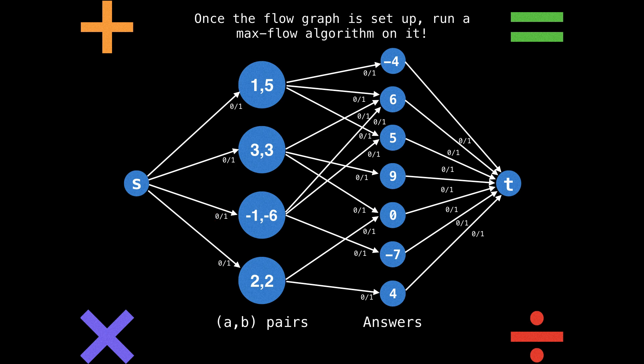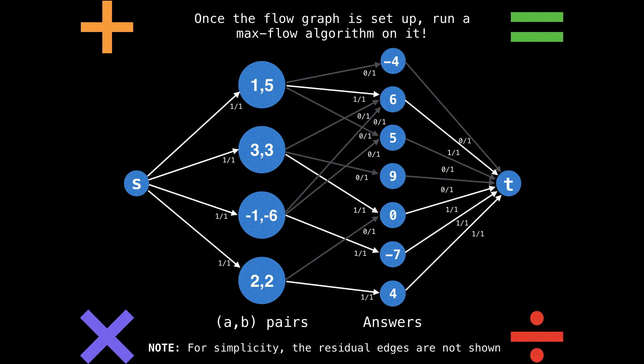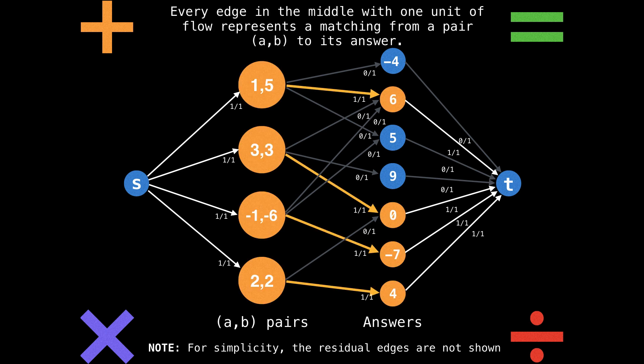Now the flow graph is set up. Let's run a max flow algorithm on it. The flow algorithm does its thing, and some edges are filled with flow. These are the edges that were selected to be part of the maximum flow. From this we can derive what the matching was. More specifically, we're interested in the middle edges. Those are the edges which give us information about the matching. Every edge in the middle with one unit of flow represents a matching from an input pair (a,b) to its answer.